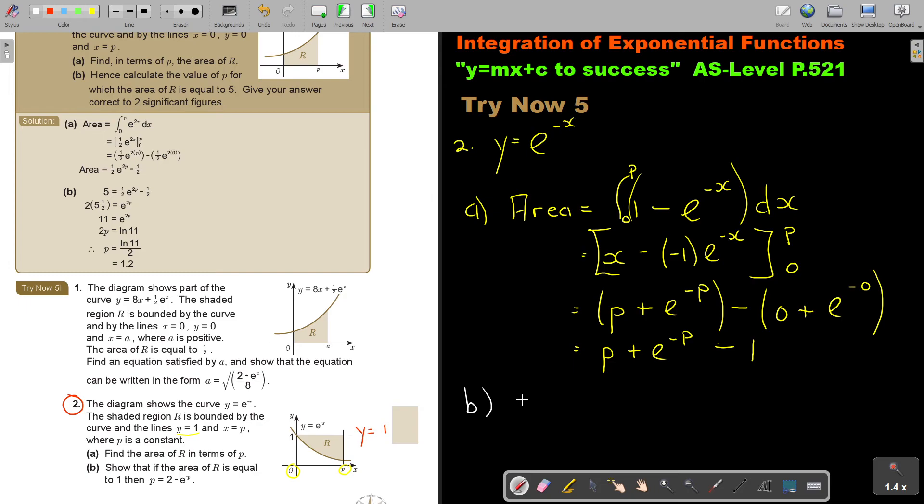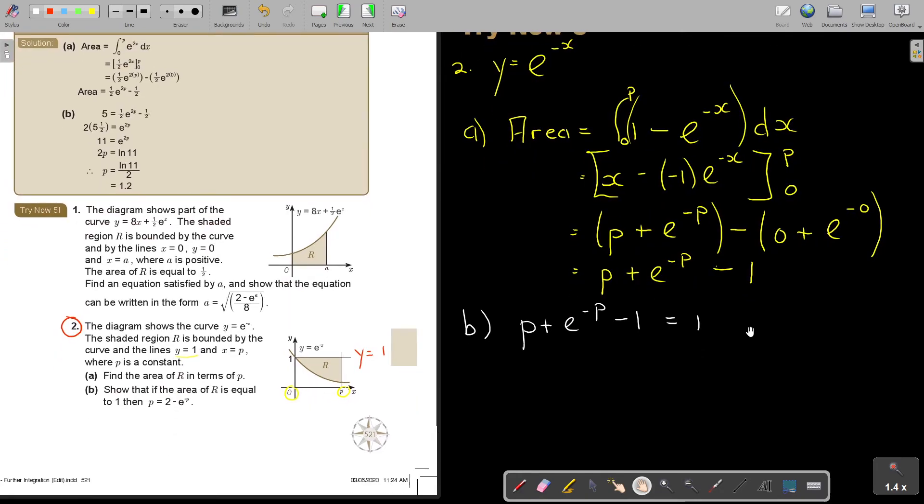Show that the area of R is equal to 1. So this area is equal to 1. And now I'm basically just going to get the expression in terms of P.